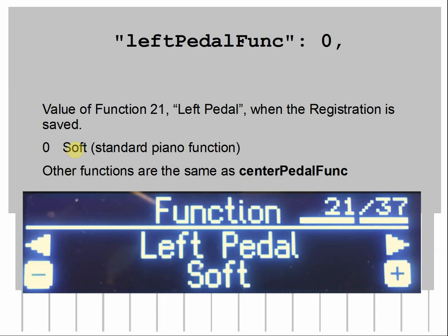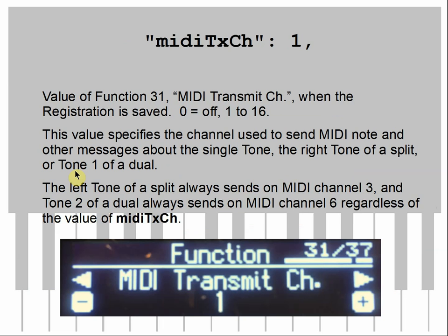Left pedal function uses the same list, except zero is soft pedal — the standard piano function. MIDI transmit channel (function 31): zero turns it off, or one through 16. This channel sends MIDI note and other information for a single tone, right tone of a split, or left of a dual. The left tone of a split always sends on MIDI channel 3; dual tone two always sends on channel 6, regardless of this setting, and there doesn't seem to be any way to edit those.